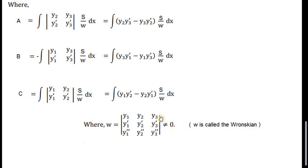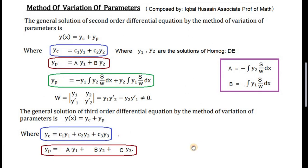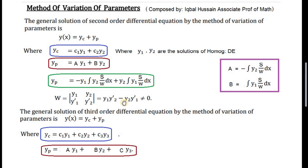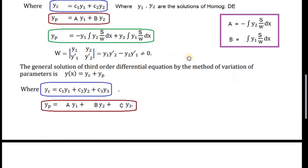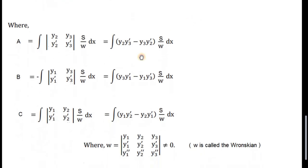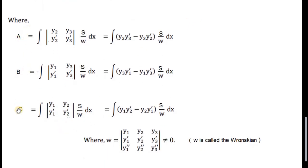The value of this determinant should not be zero because the three solutions are linearly independent. Here, from the first slide we have variation of parameters for the second order differential equation with two terms, and from here we have the method for the third order differential equation with three terms. Values of a and b are determined by two formulas, and for a, b, c we use three formulas. Remember: positive sign for a, negative for b, and positive for c. These are the formulas, and this is the Wronskian.